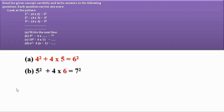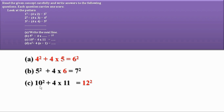For 10² + 4×11, the three consecutive numbers are 10, 11, 12, so the answer is 12². The general form is: n² + 4×(n+1) = (n+2)², where the consecutive numbers are n, n+1, and n+2.